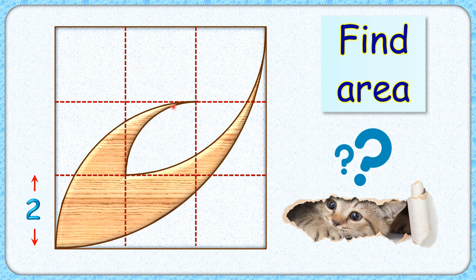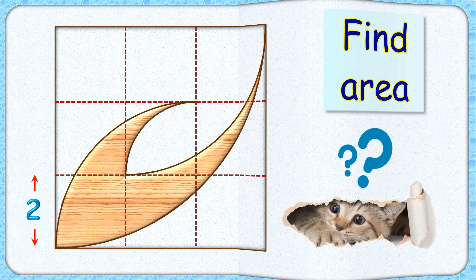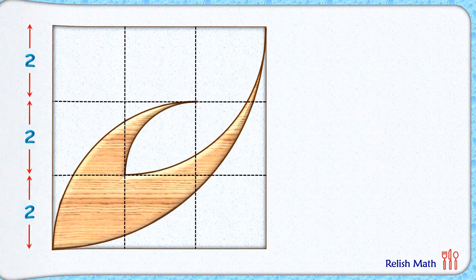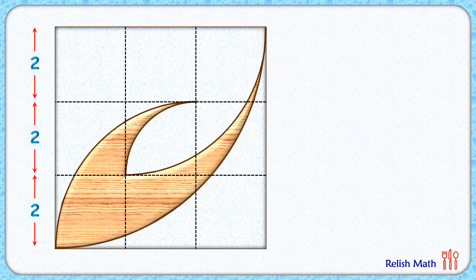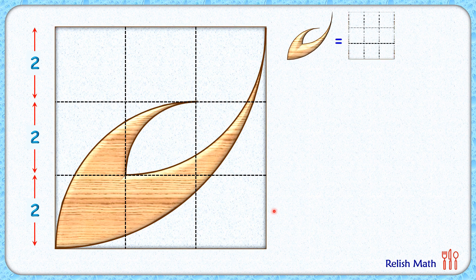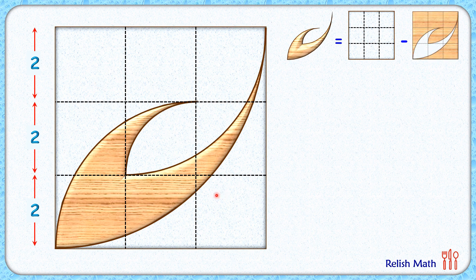The exciting part is that with this given data we have to find the area of this brown shape. The area of this brown figure equals the area of the full square minus the area of the remaining region. We do it this way because the area of this figure is difficult to calculate directly.